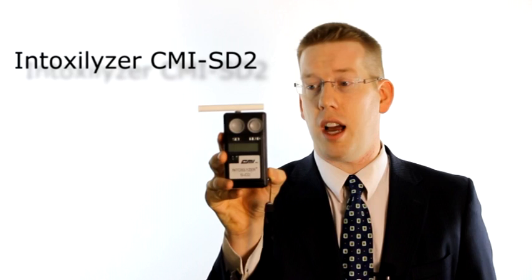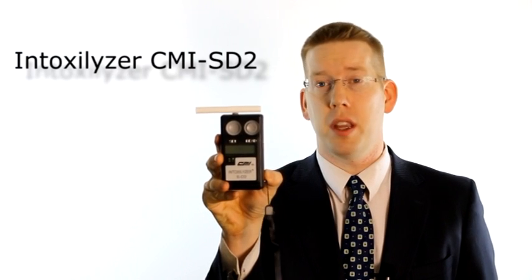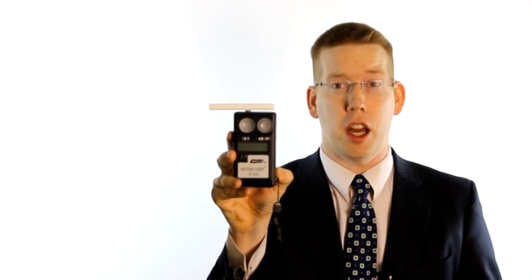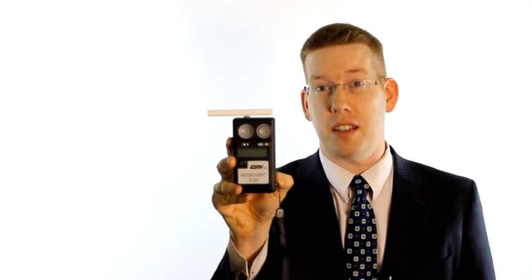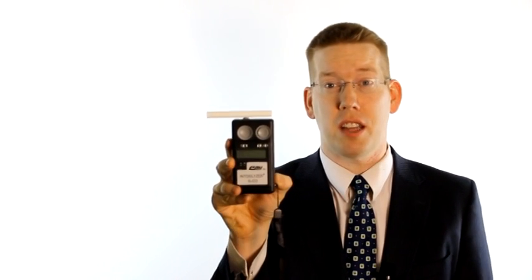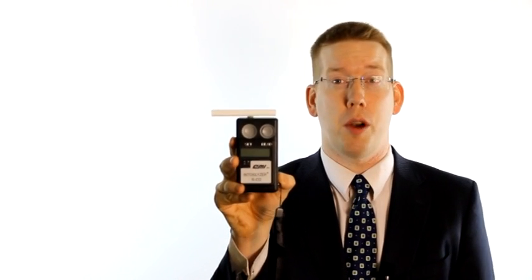Now this device I have here is the Intoxalyzer CMI-SD2. It's the primary field breath testing device used by the Fairfax County Police Department. It's known as a preliminary breath test or PBT.